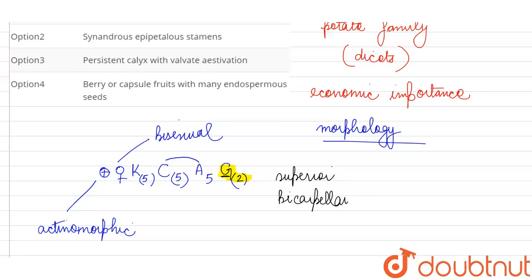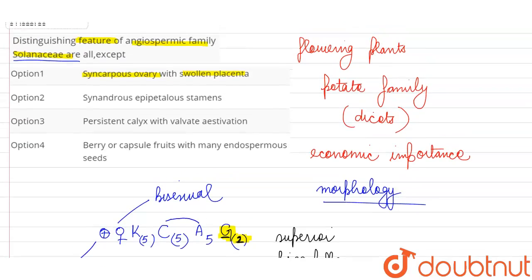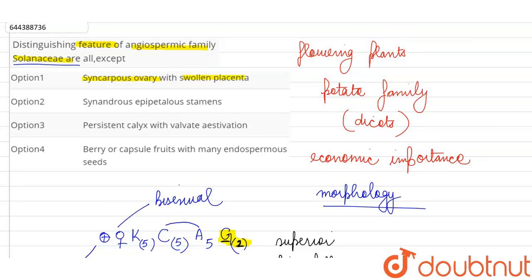And syncarpous condition is seen because we have put parenthesis, we have put bracket over this two just to show that these two carpels are fused with each other. So syncarpous condition.